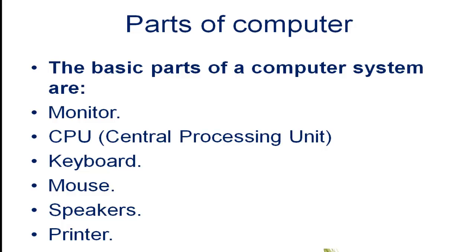The basic parts of a computer system are: Monitor, CPU, Keyboard, Mouse, Speakers, and Printer.